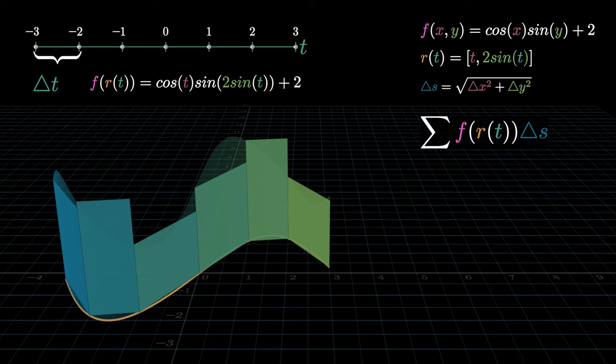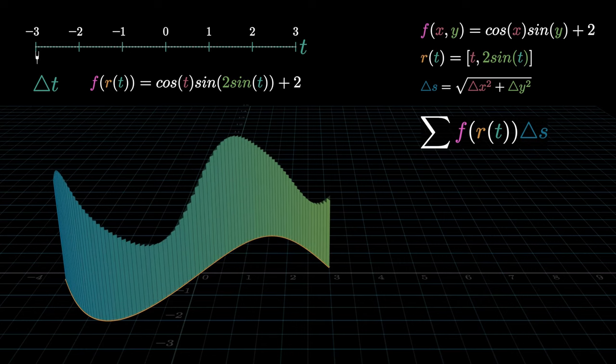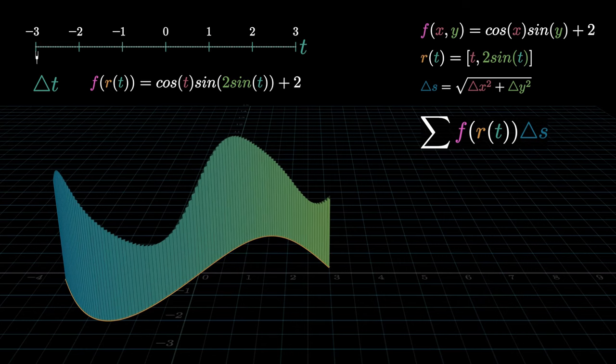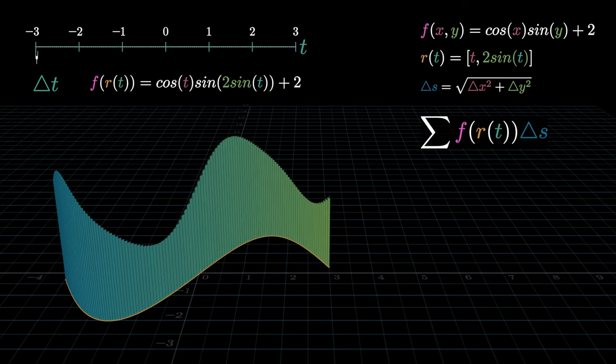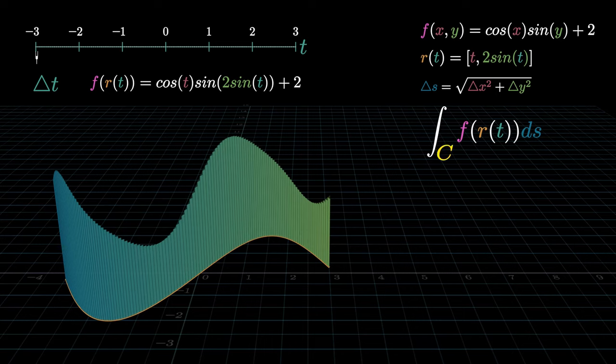We will now crank up the number of rectangles along the curve to infinity to make our approximation increasingly better. This is a regular tool in calculus, which is when we replace the summation with an integral. Notice that the integral sign has a c written at the bottom to emphasize that we are now integrating along a curve.